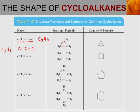You can write out all of the carbons and hydrogens in your structural formula, or you can draw the condensed formula, which is just a simple triangle for cyclopropane, a square for cyclobutane, a pentagon for cyclopentane, and a hexagon for cyclohexane. In the condensed formula, the hydrogen atoms are just assumed — so each corner would have two hydrogens, and each corner represents a carbon.